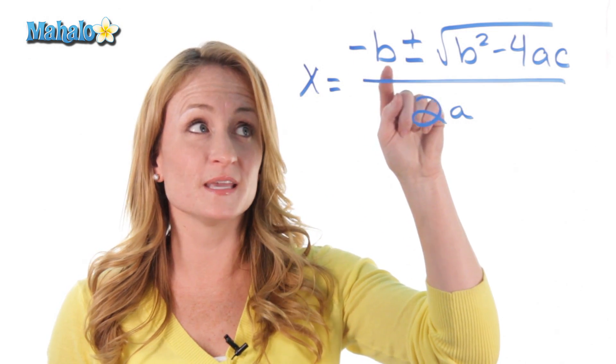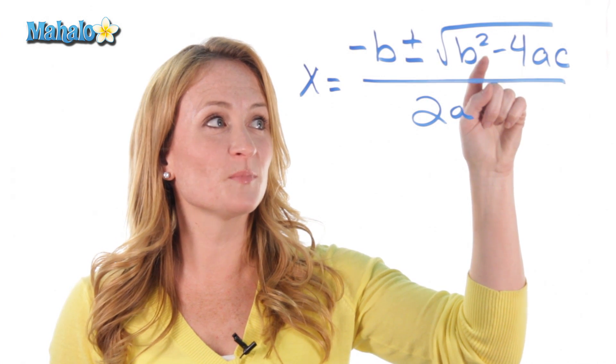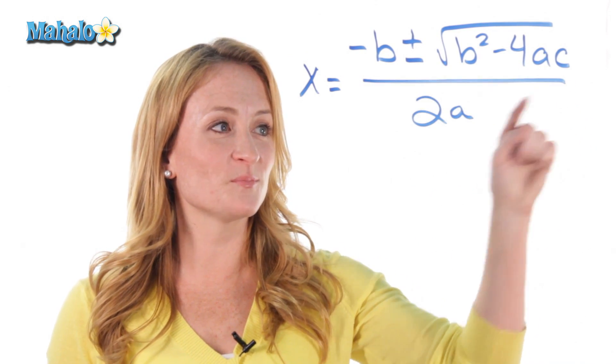X equals opposite B plus or minus the square root B squared minus 4AC divided by 2A.